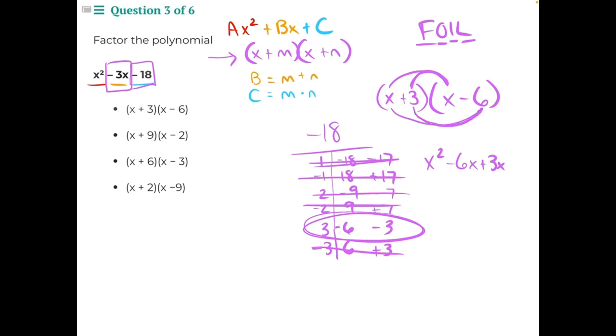And then finally the last numbers multiplied together, 3 times negative 6 would give us negative 18. So then we simplify, negative 6x plus 3x would give us negative 3x. And now we have an equation that matches the equation that we started with. So that means our first option is our correct answer.